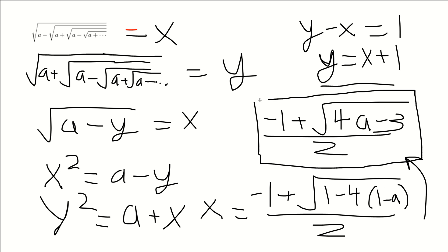So that is our closed form expression for this. So the nested alternating square root actually turns out to equal negative 1 plus the square root of 4a minus 3 all over 2.